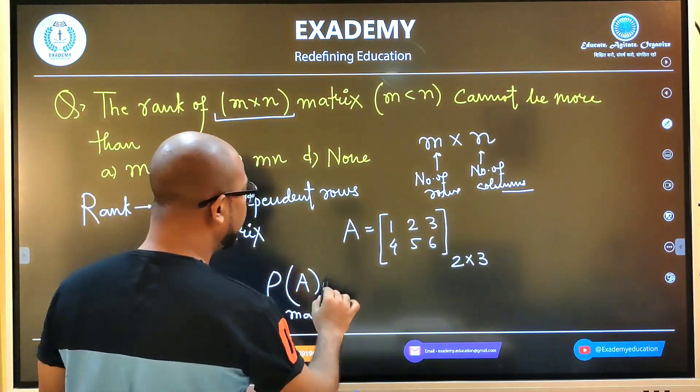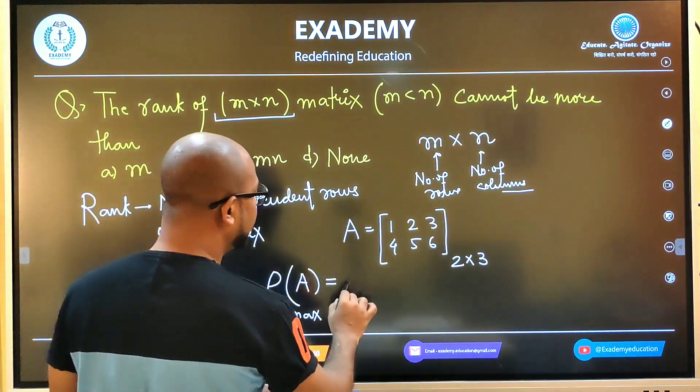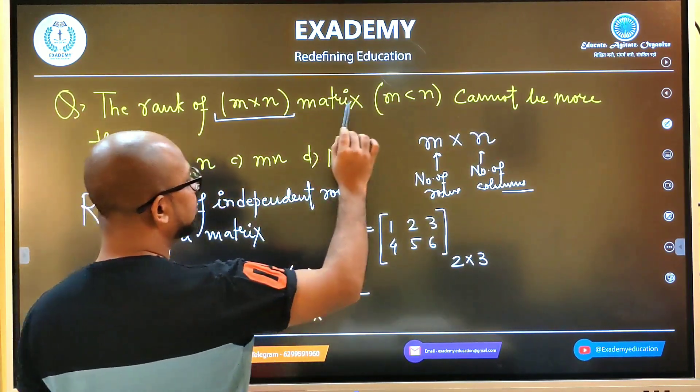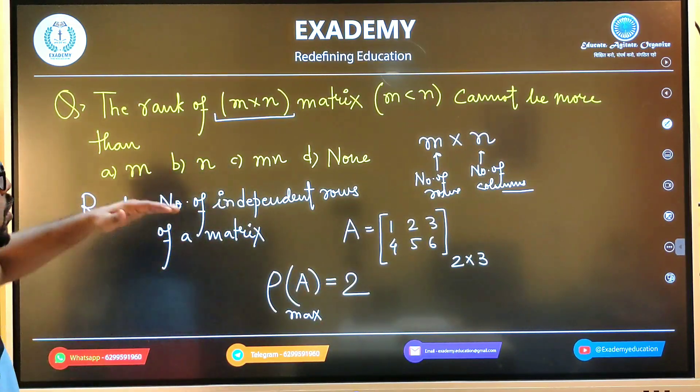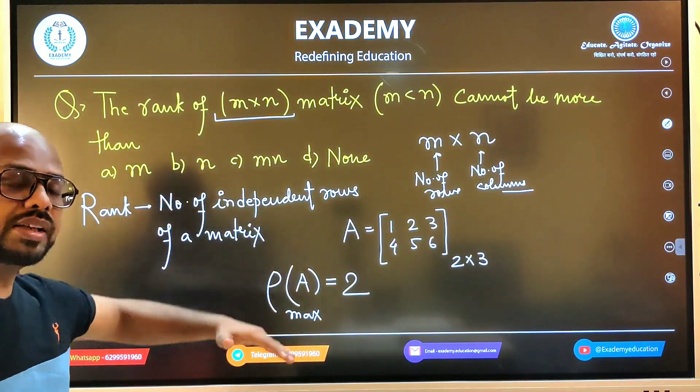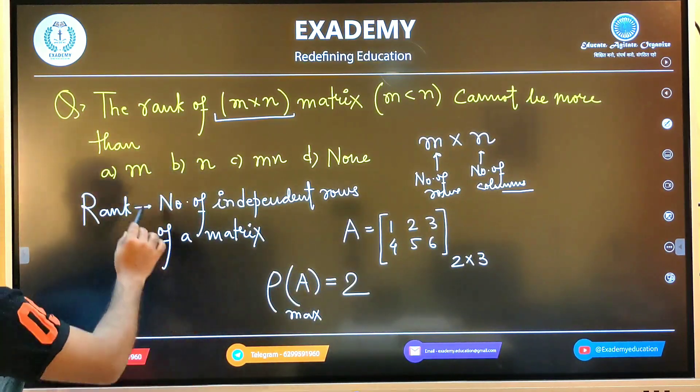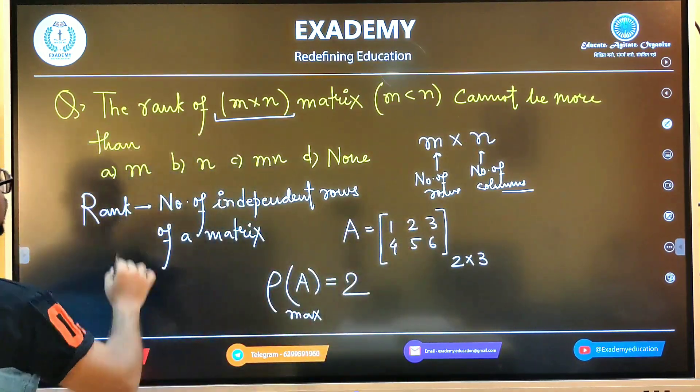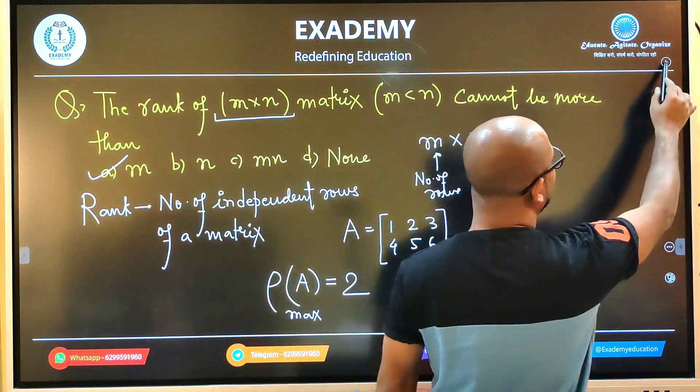Maximum rank means number of independent rows. How many independent rows? That is 2. So the maximum rank here is 2, which equals the number of rows M. Therefore, option number A is correct. Do you understand?